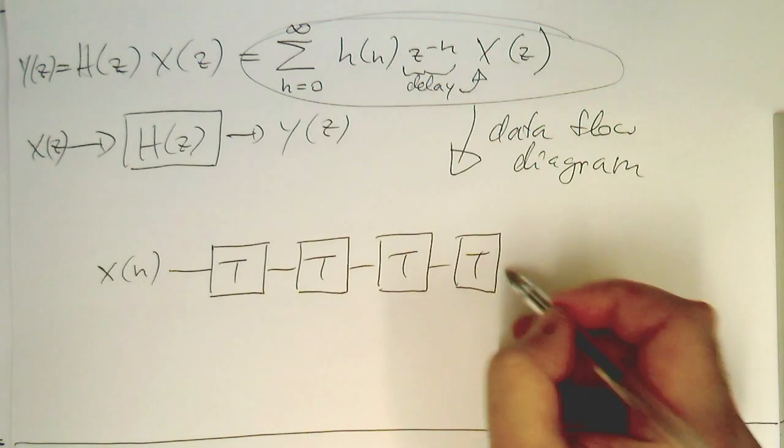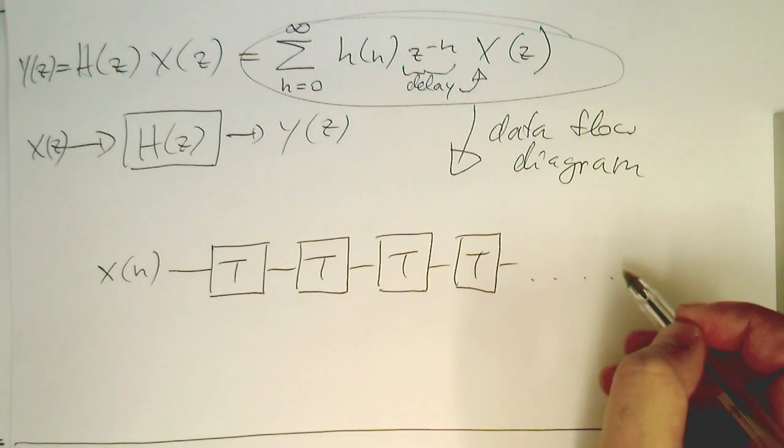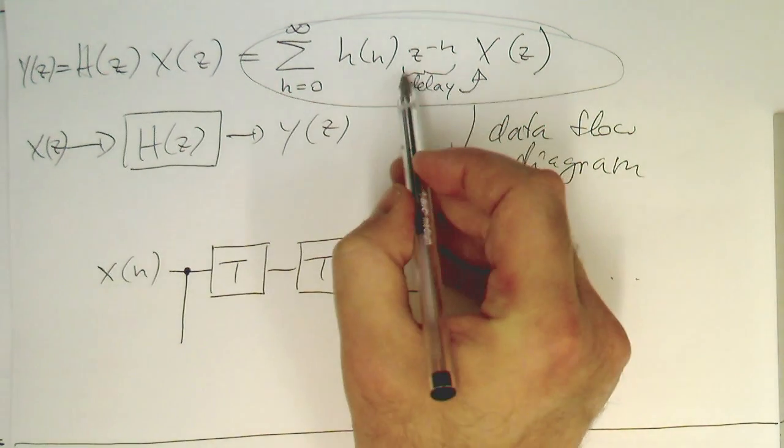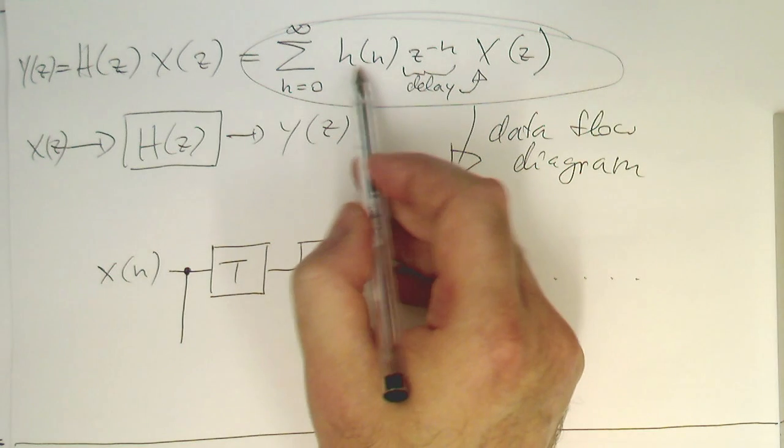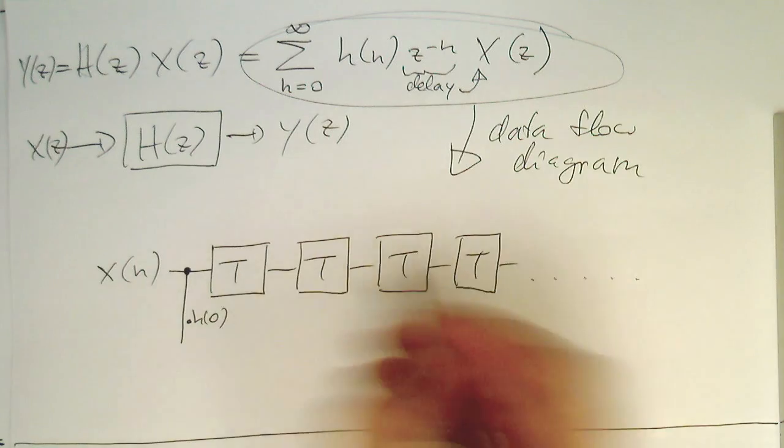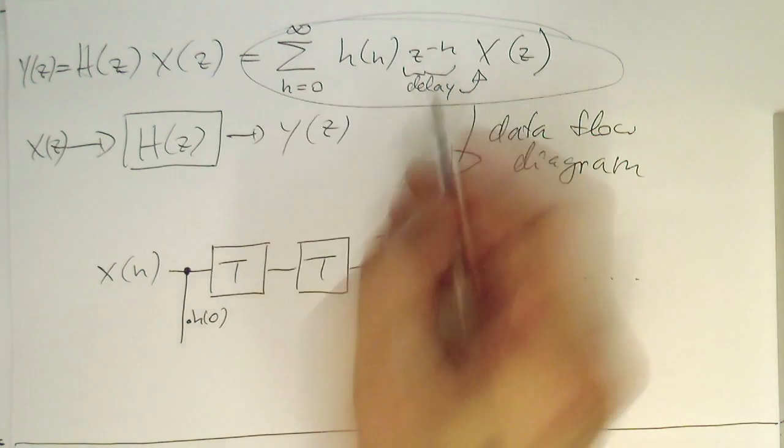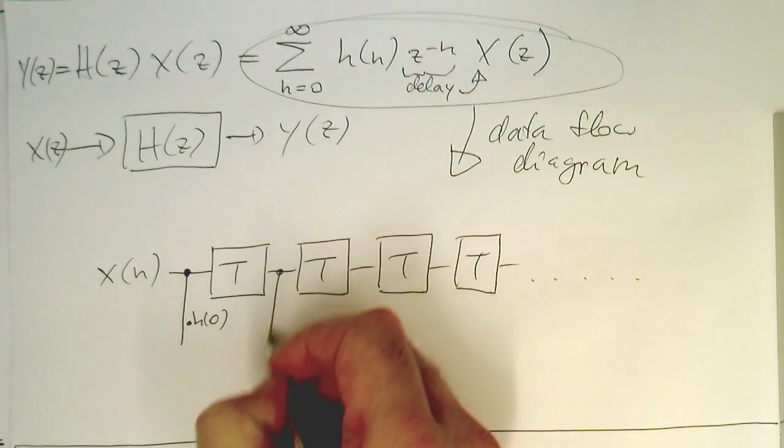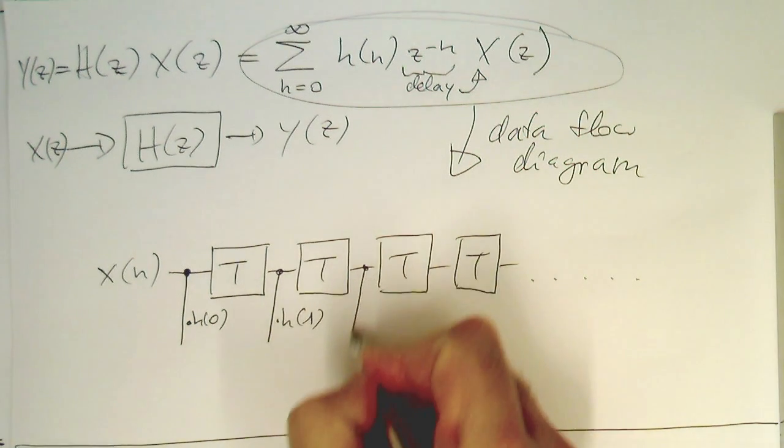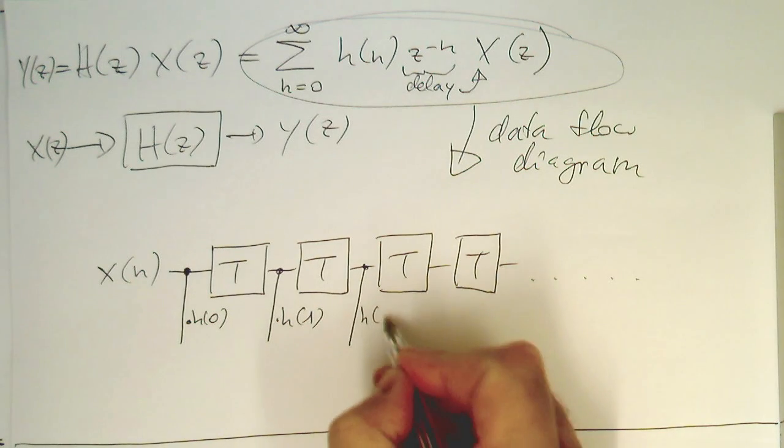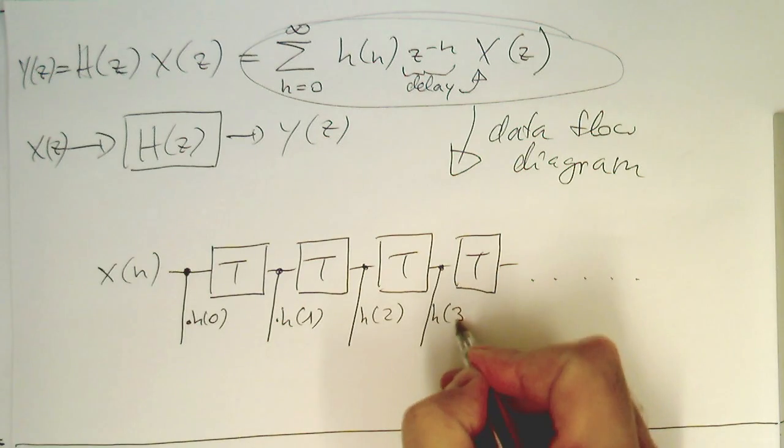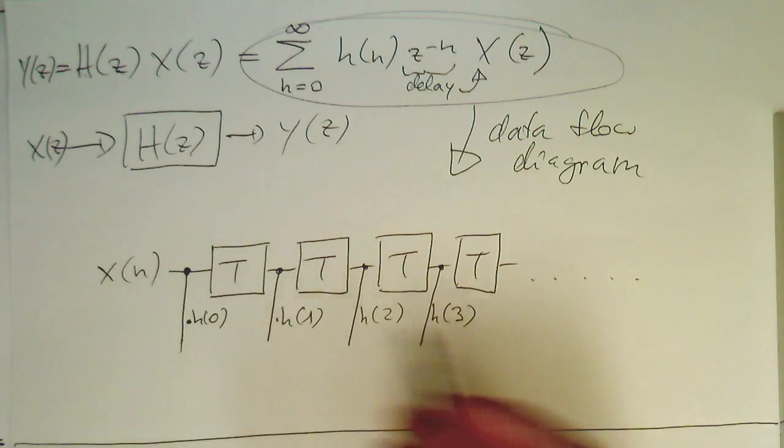We're writing an infinite number of delay steps. Then we take the undelayed version here, multiply this by H(0). Then we take the version delayed by one time step here and multiply this by H(1). And then we multiply this by H(2), and we multiply this one by H(3), and so on and so on.